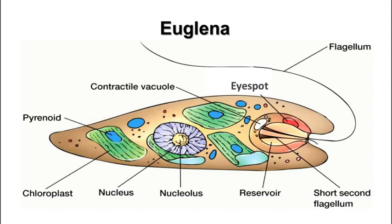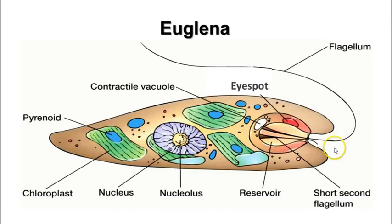The euglenoids are a group of organisms that are not only photosynthetic but also heterotrophic — they can eat other things if there's no light available. They also have a contractile vacuole. They have two flagella, a longer one and a shorter one, used for movement, with one used kind of like a rudder to choose the direction.